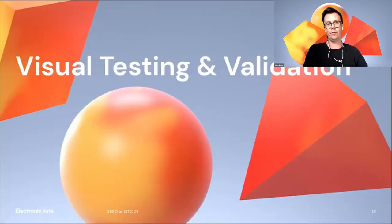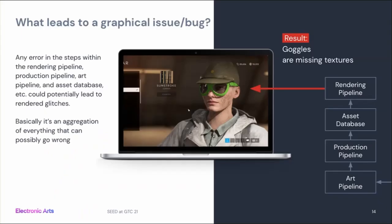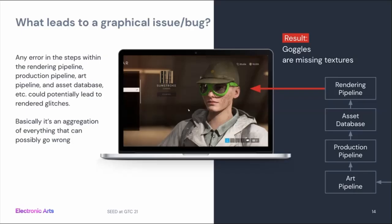Next I want to talk about visual testing — it's exactly what it sounds like: testing of visual content. To set the scene, what leads to graphical issues? There's a lot: the art pipeline, production pipeline, asset database, and rendering pipeline — if something goes wrong at any point you'll have visual problems. Especially now with cross-platform development, something might look good on PC where you develop, but then shipped on PlayStation something might go wrong due to missing drivers or other issues. Finding bugs in visual content is basically an aggregation of everything that can go wrong.